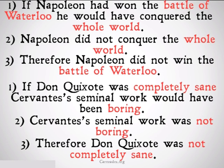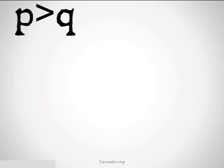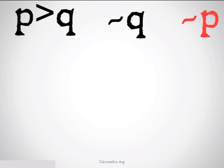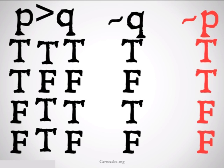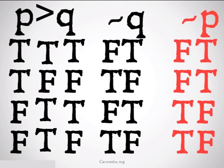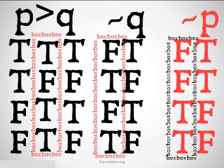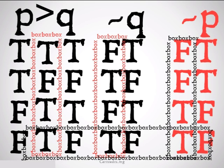Let's take a look at the truth tables. P implies Q, not Q, therefore not P — that is basically what modus tollens is. If we fill in the truth tables under each of these premises and the conclusion, we discover that the only time that the premises are true is when the conclusion is also true, so this is a valid form of argument.